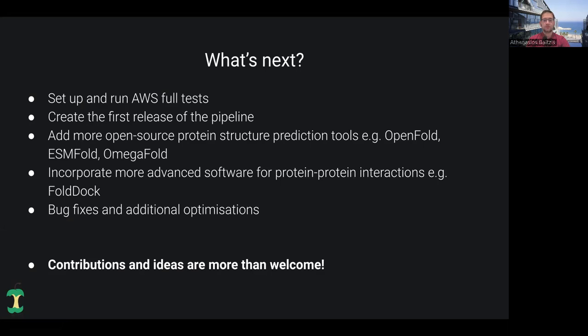We are also interested in incorporating more advanced software for protein-protein interaction such as FoldDock, because there are plenty of researchers interested in predicting advanced multimers. Moreover, we want to solve bug fixes and add more optimizations upon request. We are very open to contributions and ideas in order to improve the pipeline and adapt it to the needs of the community. Please do not hesitate to contact us and propose or contribute to the already existing repository.